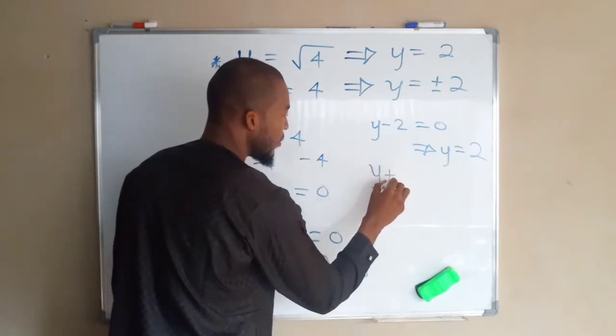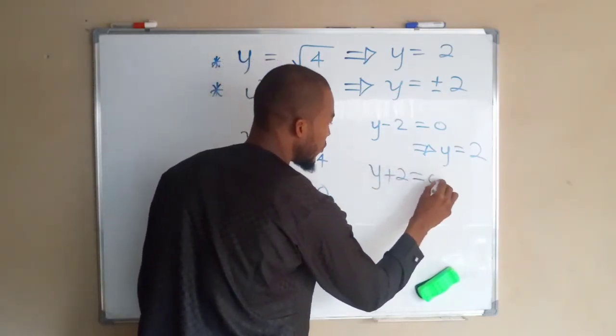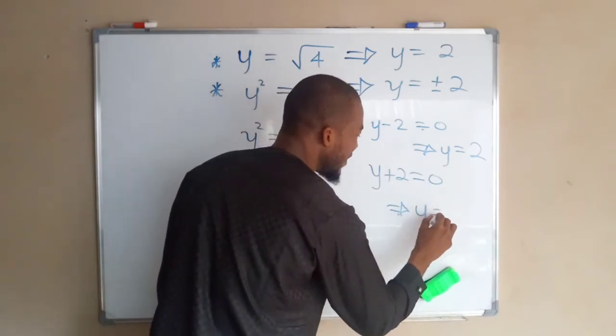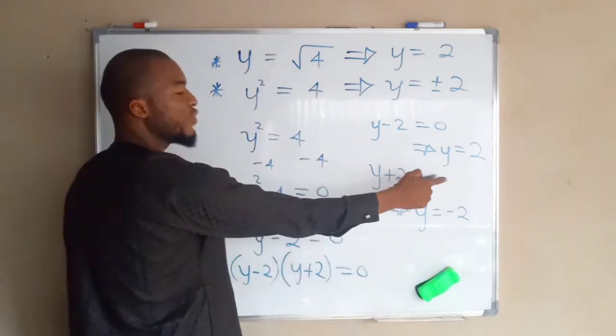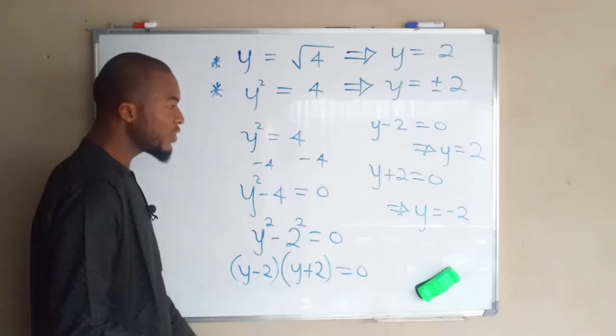The second one, which is y plus two equals zero, this implies that y must be negative two for this equation to be equal to zero. So this is why we have...